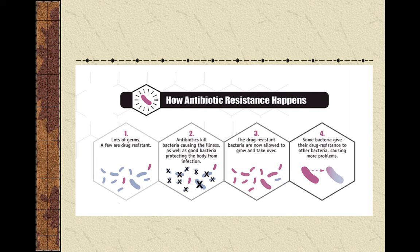Think about how this works: there are many many bacteria, and a few of them might have resistance to an antibiotic. When they are exposed to the antibiotic, most of the bacteria will die, but perhaps a few that just happen to have this resistance already will survive, and those are the bacteria that will reproduce. Not only that, but these bacteria may pass on this drug resistance in the form of genetic information to other bacteria around them — whether they are the same species or even other species — in the process of horizontal gene transfer.